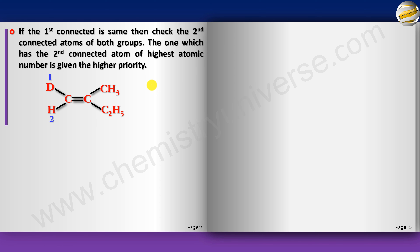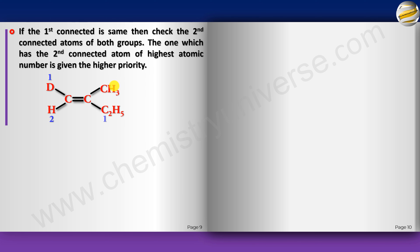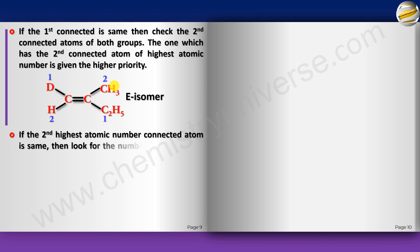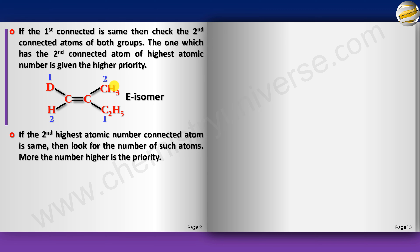Looking at an example where one carbon (CH3) is attached to three hydrogens and another carbon (C2H5-like) is attached to two hydrogens and one carbon: the second-level atoms for the first group are all H, but for the second group the highest second-level atom is C. Carbon beats hydrogen, so the group with a carbon at the second level gets priority 1. If the second highest atomic number atom is the same, then look at how many such atoms there are — more atoms means higher priority.